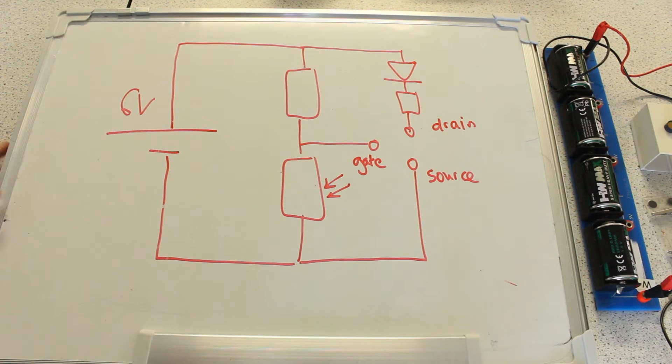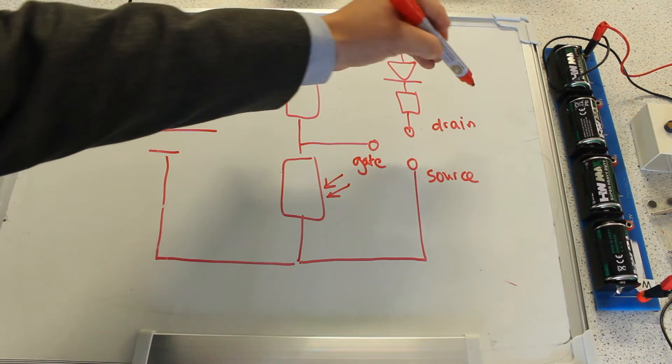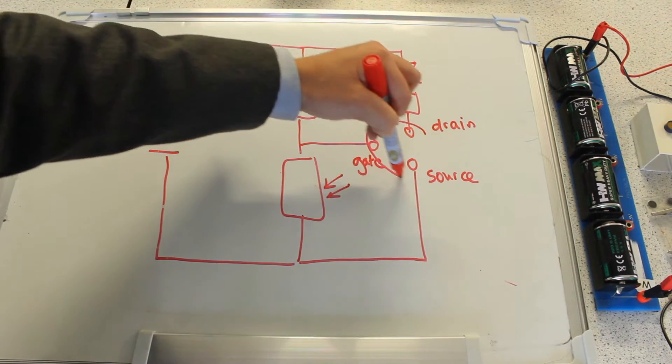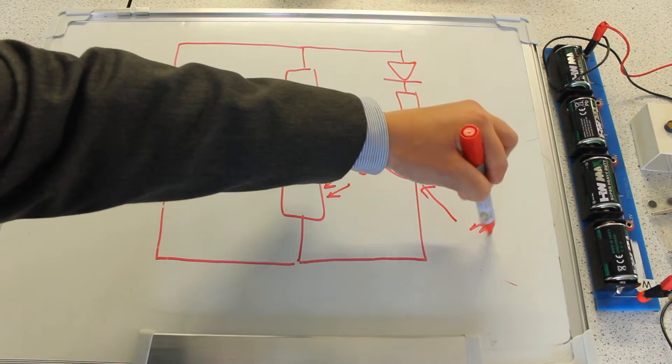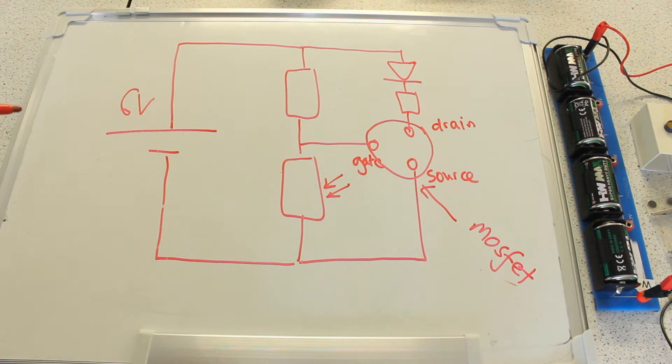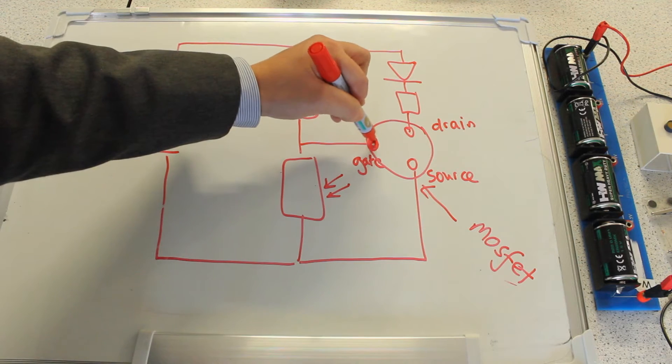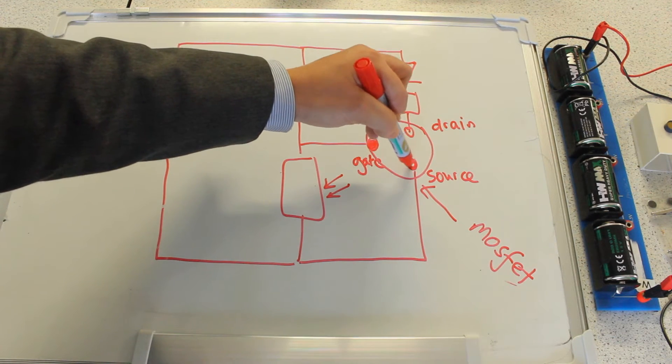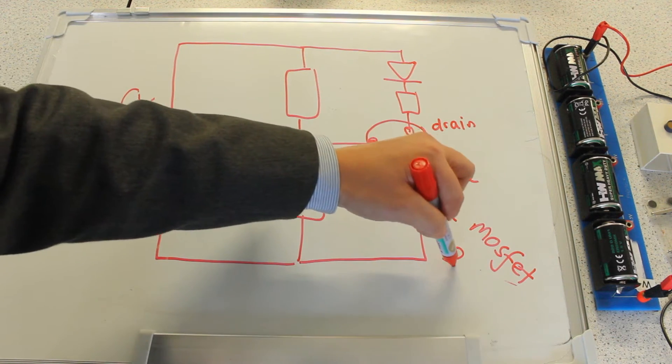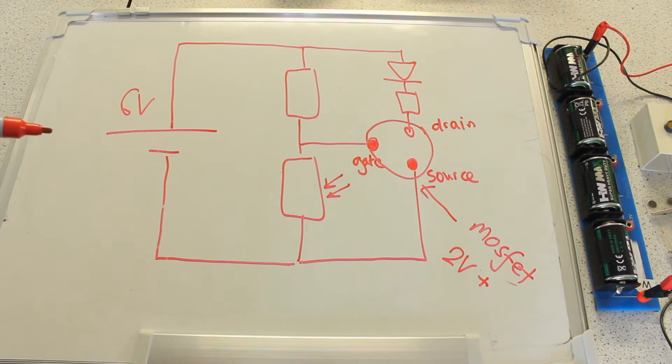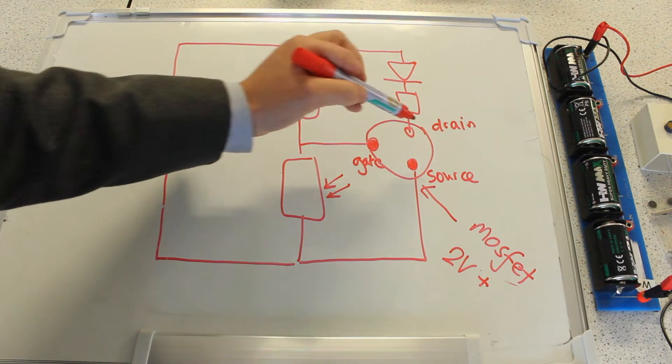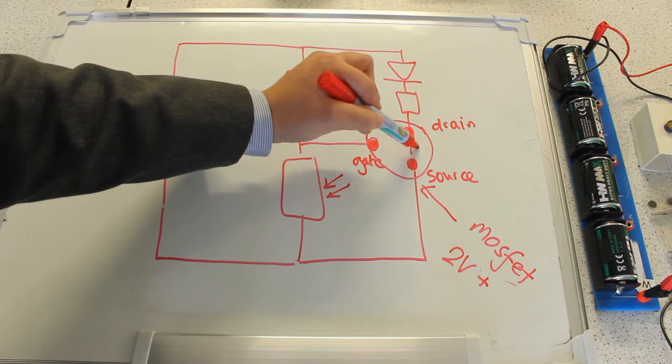The key component here is this MOSFET, a type of transistor. Essentially, when the potential difference between the gate, this point here, and the source, this point here, is two volts or more, the transistor turns on and current is allowed to flow between the drain and the source.